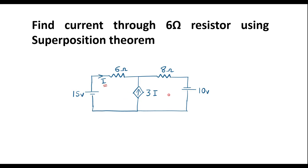In this circuit, we can observe that there are total 3 sources. Two are independent sources — 15 volt and 10 volt — whereas 3I is a dependent current source. In superposition theorem, we need to consider one source at a time. Since there is a dependent source, we should keep it as it is. We have to consider 15 volt source once and 10 volt source once, and the sum of those two currents is the total current through the 6 ohm resistor.